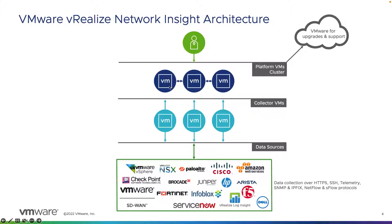As you can see here, we have our platforms and we also have our collectors. Depending on the size and scale, it's going to determine the number of platforms you're going to deploy, which could be into a cluster, and also the number of collector virtual machines. Both of these are virtual machines deployed as OVAs. There are no physical boxes being deployed with vRealize Network Insight. It's also important to call out that we are an agentless solution — we do not use any agents on any of the various vendors we integrate with when pulling in data.